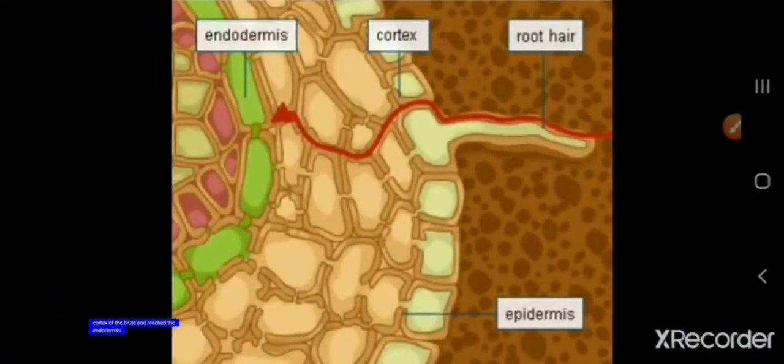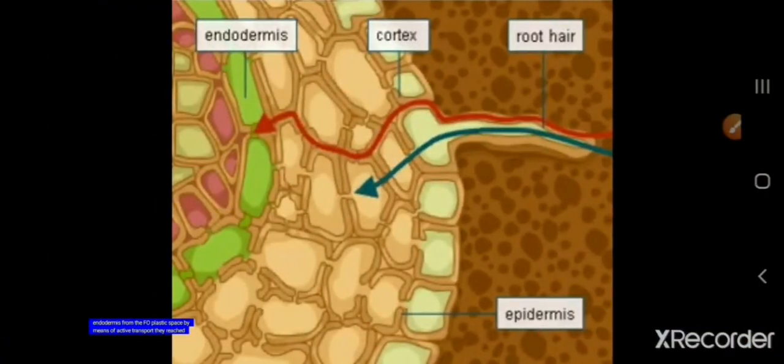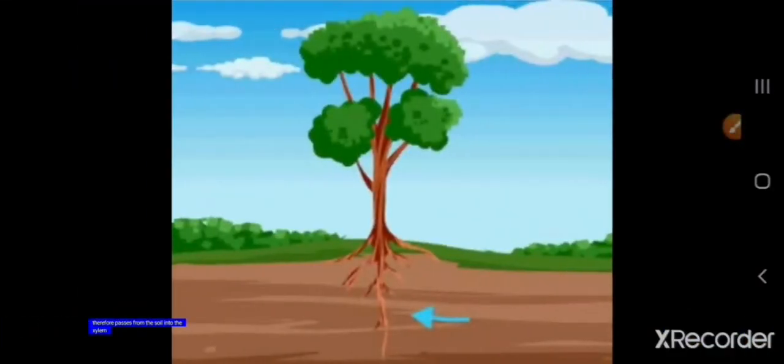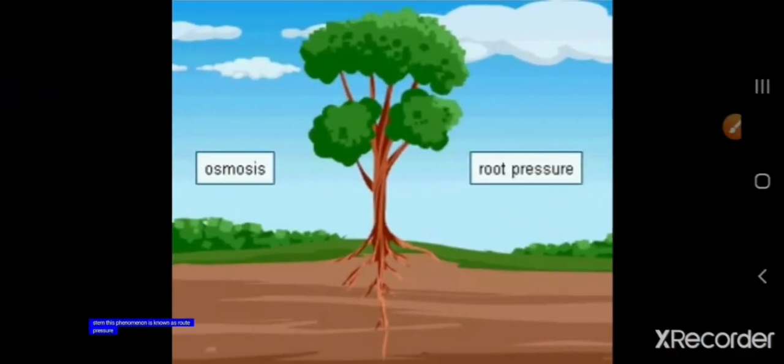And this pressure created in the root hairs forces the water to move up. And this is known as the root pressure. This is called root pressure and it helps in movement of water to the top of the tree.